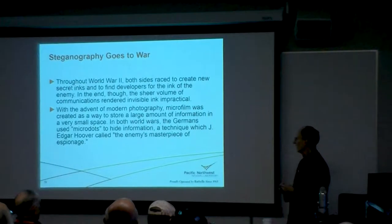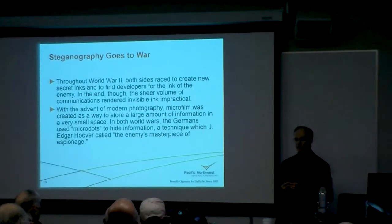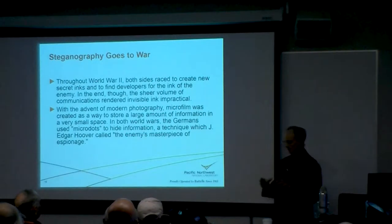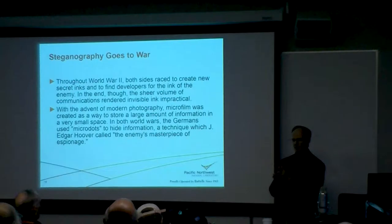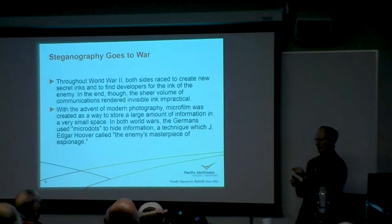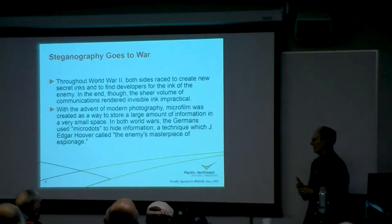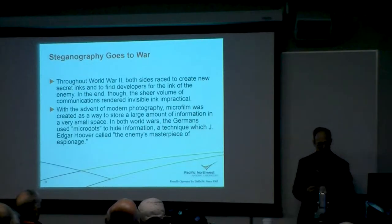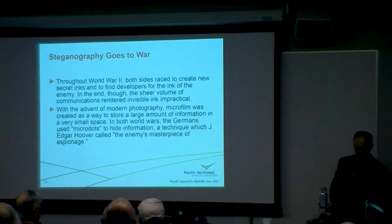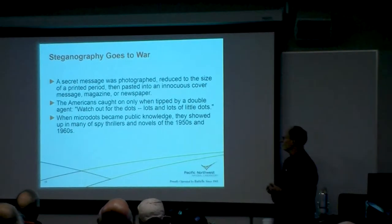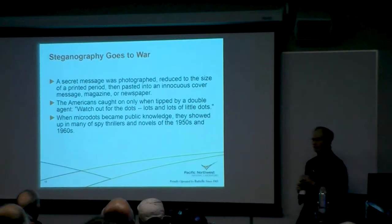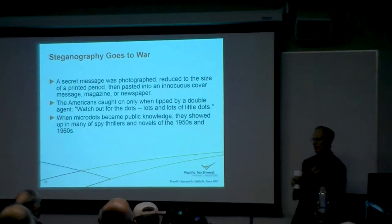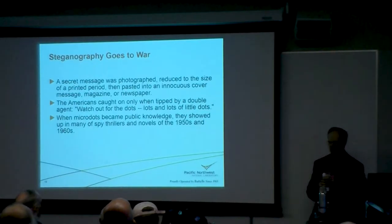In World War II, the Germans — being very good at photography and chemistry — came up with the idea of microdots. They would take information and successively shrink it down to the size of a period, put that on a seemingly harmless piece of paper, and deliver it. J. Edgar Hoover called it the enemy's masterpiece of espionage. They didn't know about it until a tipster, a double agent, said 'watch out for the dots — lots and lots of little dots.' Once microdots became known publicly, they were used in spy novels and movies during the 50s and 60s.